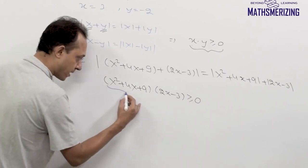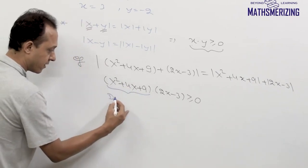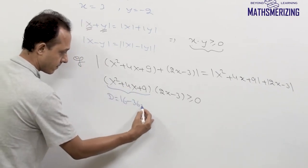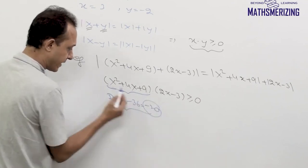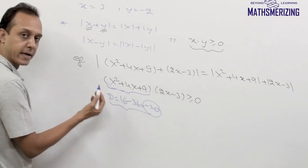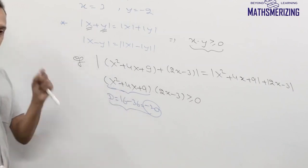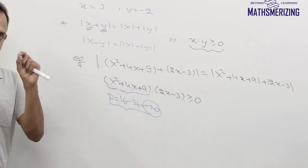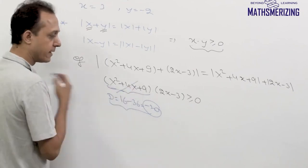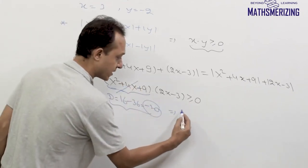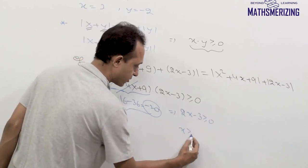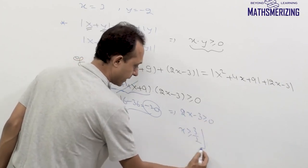For the quadratic expression part, the discriminant d is -20 and a is 1. When d < 0 and a > 0, the quadratic is always positive. So if any expression doesn't change sign, I remove it from the inequality keeping the sign. The answer becomes 2x - 3 ≥ 0, so x ≥ 3/2.